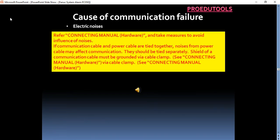Electric noises. Refer connecting manual hardware and take measures to avoid influence of noises. If communication cable and power cable are tied together, noises from power cable may affect communication. They should be tied separately. Shield of a communication cable must be grounded via cable clamp. See connecting manual hardware.